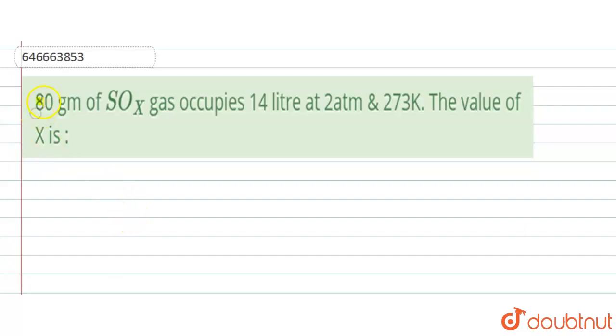The question is: 80 grams of SOx gas occupies 14 liters at 2 atmospheres and 273 Kelvin. The value of x is? We are given the weight, volume, pressure, and temperature. We want to know this x value.